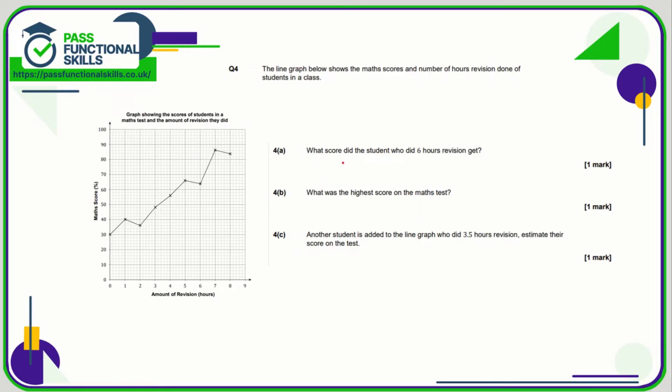Question number four, what score did the student who did six hours of revision get? Amount of revision in hours is along the bottom. Here's six, go up and we're finding it's this dot here. We're going up in 10 so each faint line is an increase of two. So if this is 60, 62, 64 percent. The highest score on the maths test was the dot that is the highest here and that corresponds to, looks like it's just two lines down from 90 to 88, 86 percent.